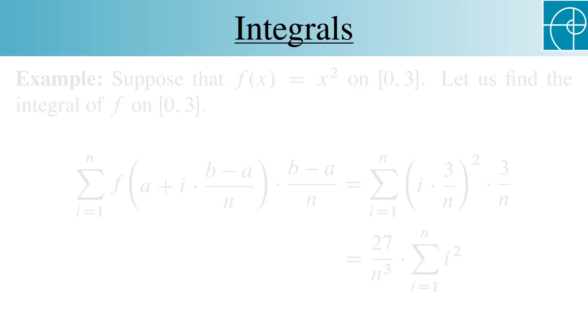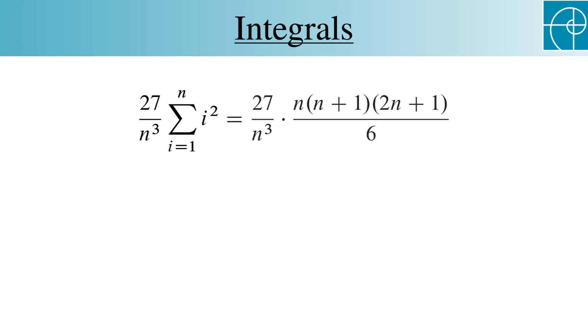So the sum becomes 27 over n cubed times the sum from i equals 1 to n of i squared. We have a nice formula for that, so we can write this without a sigma. Let's also switch the places of the terms in the denominators. This doesn't make a mathematical difference, but it's nice to group all of the terms involving n in one place.